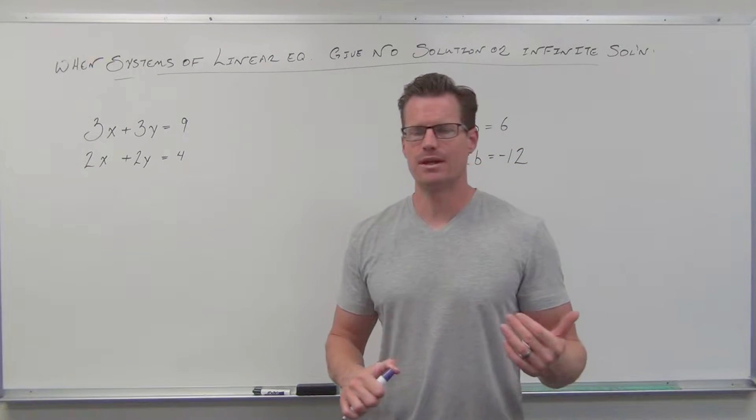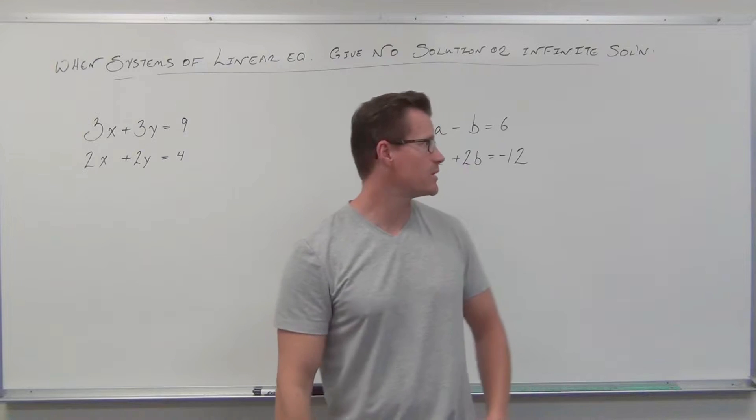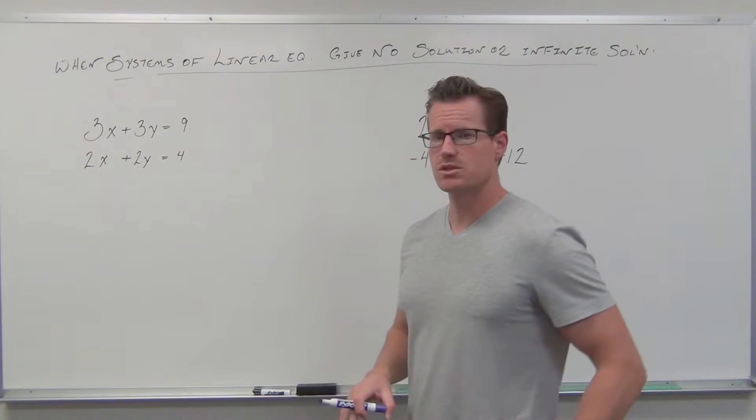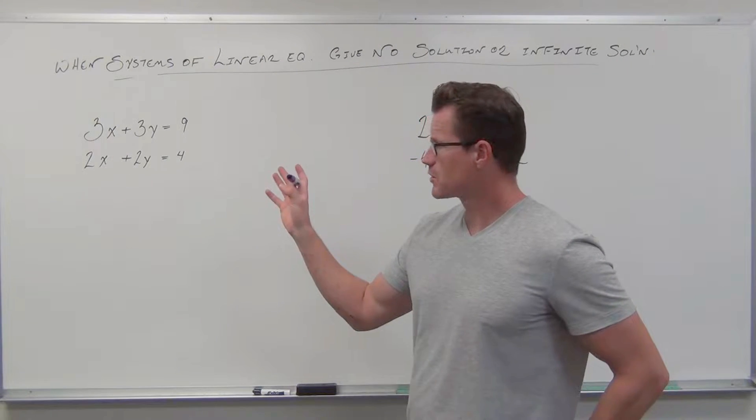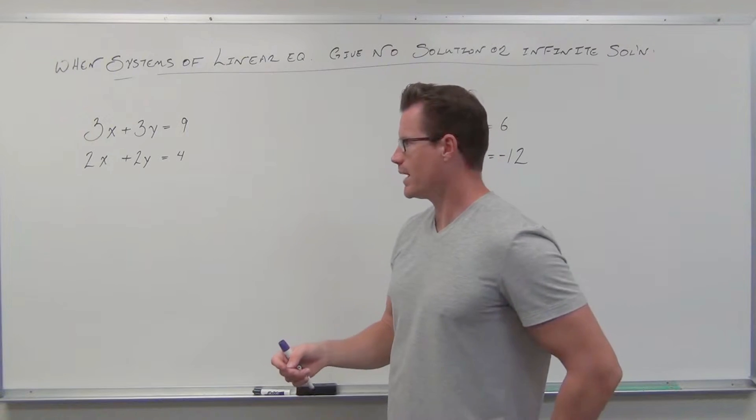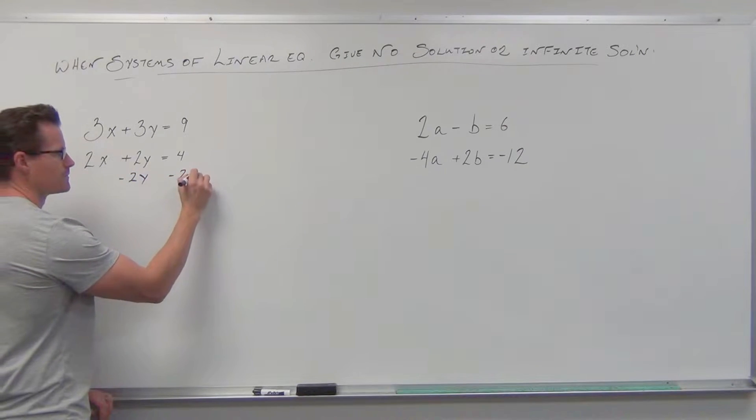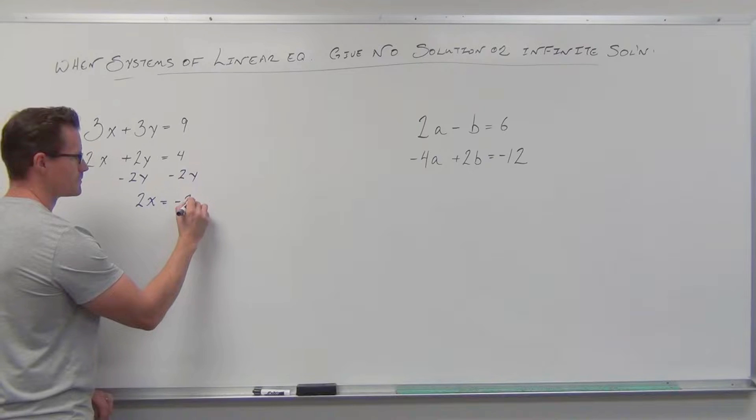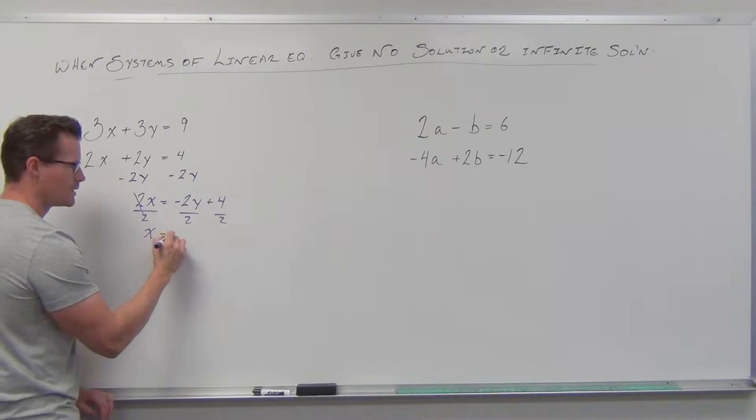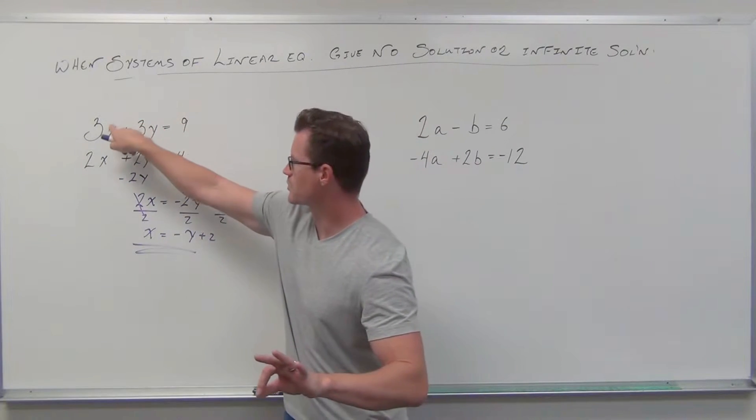We're going to do this with substitution method. Once you cover elimination method, I'd probably do that example with elimination. But because I want to practice substitution a little bit more with you, we're going to do the substitution method. Let's pick one of these equations that we can solve for one variable. I want to pick this one, and I'm going to solve this for the variable x. So I'm going to solve this for x. If we divide both sides by 2, that means everything by 2, we get x = -y + 2.